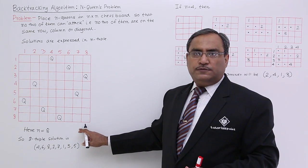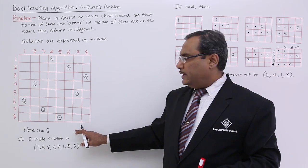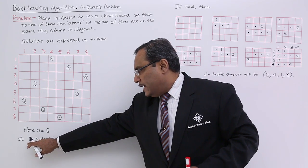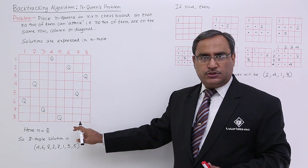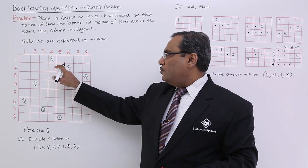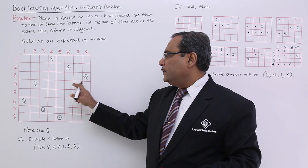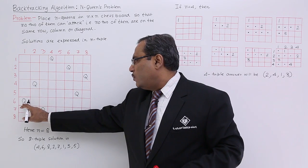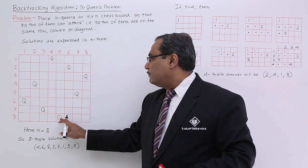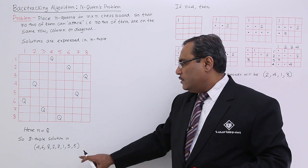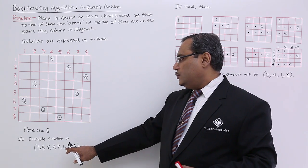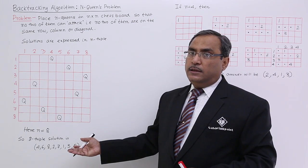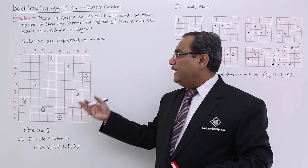This is one of the solutions for the 8-Queens problem where N equals 8. The 8-tuple solution is (4, 6, 8, 2, 7, 1, 3, 5), representing the column positions of each queen row by row.